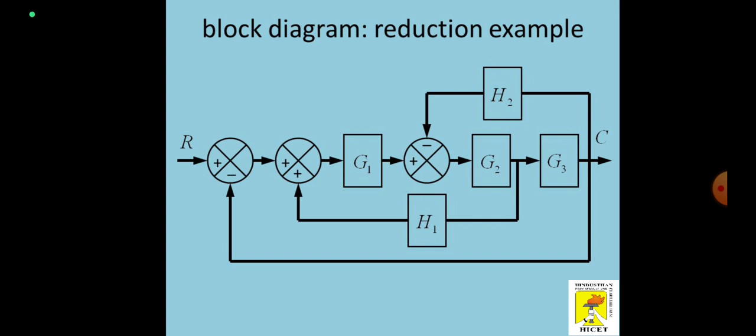The second summing point has H1 as the feedback and G1 as the forward path. If you have a forward path, in between we have another summing point, so we have to interchange this summing point ahead of G2. I may get G1 and G2 as a forward path and H1 as the feedback — I can solve it this way. And if you see the third summing point, I can have G2, H2, and G3 should be ahead of this, so I may switch this H1 point to be ahead of G3.